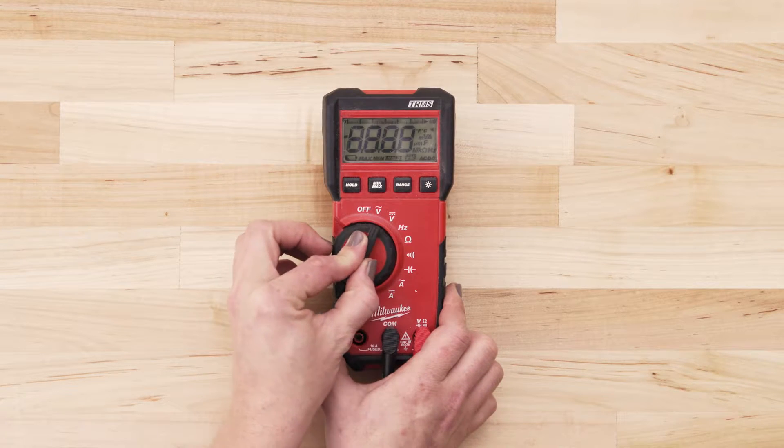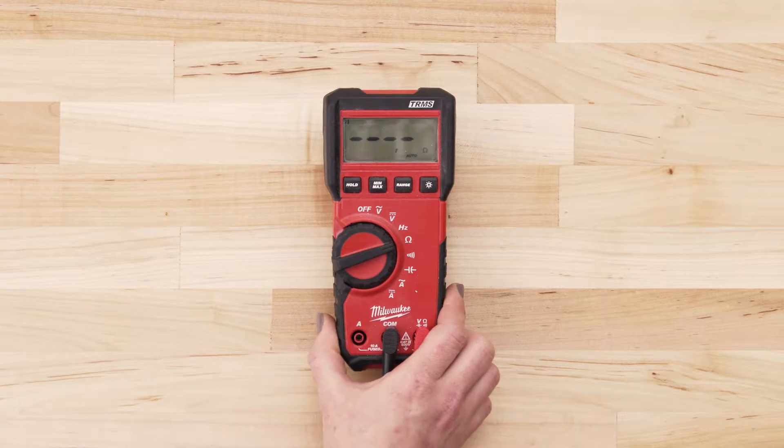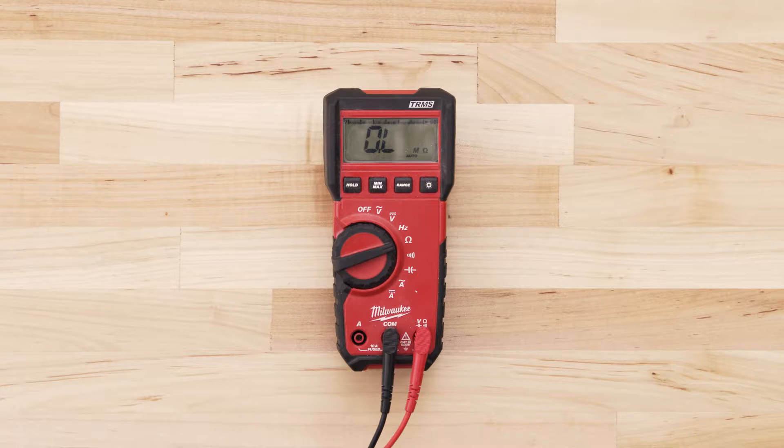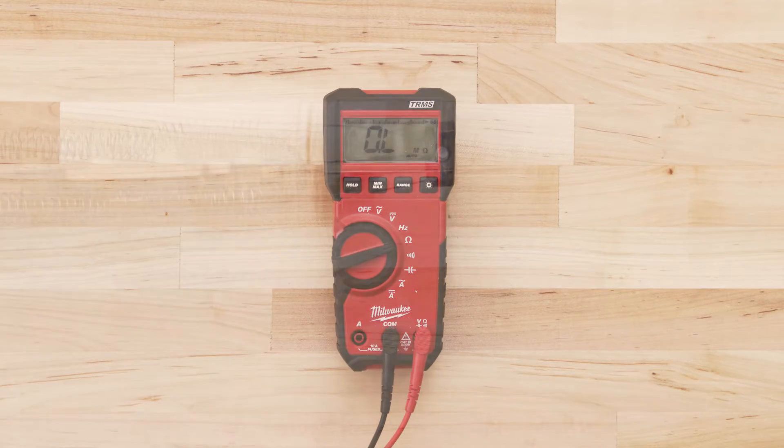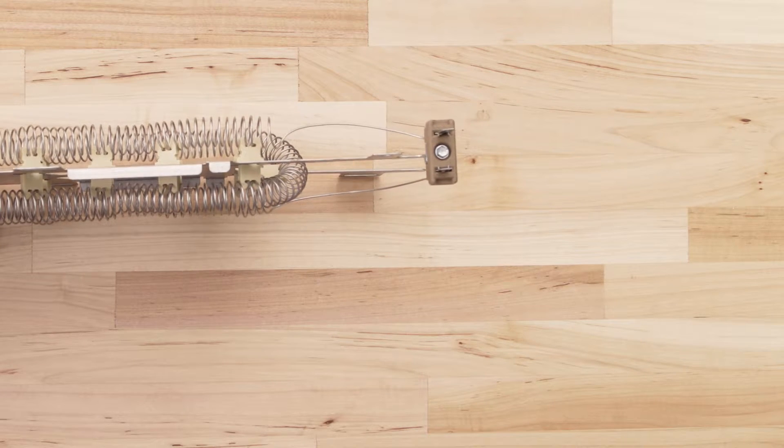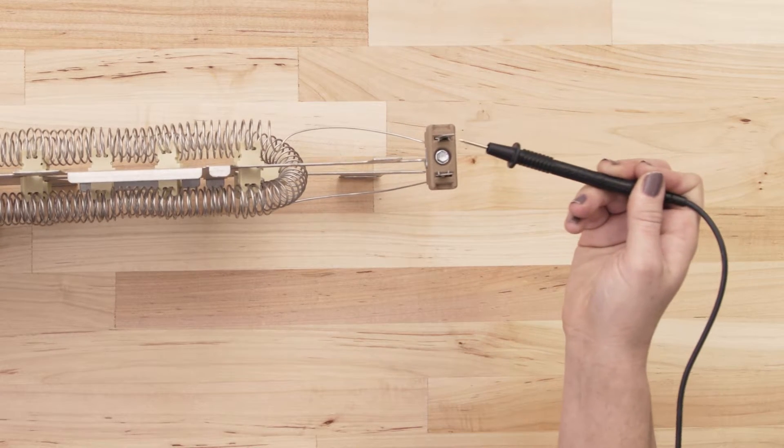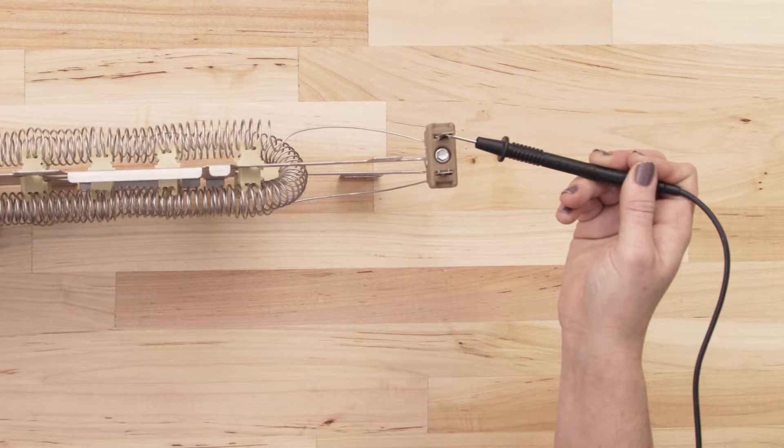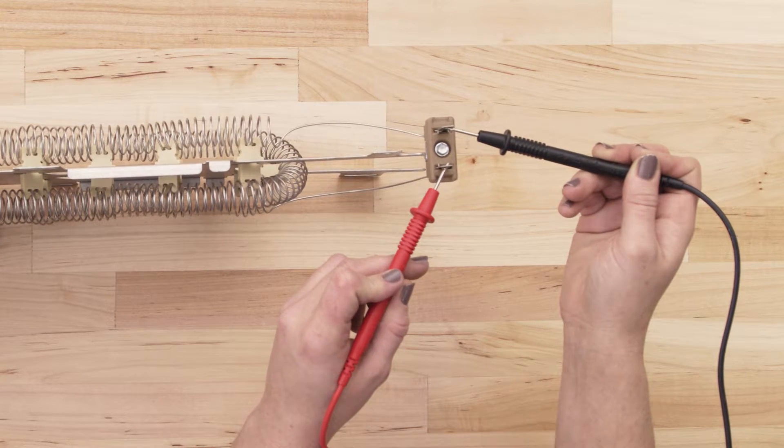If you're using a digital multimeter, also set the dial to the lowest ohms of resistance. To test for continuity, take the probe from the multimeter and touch it to one of the terminals. Now touch the second probe to the remaining terminal.